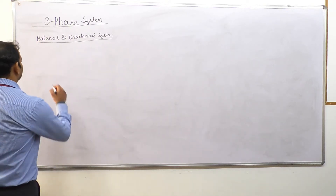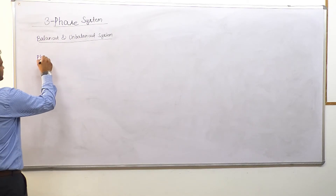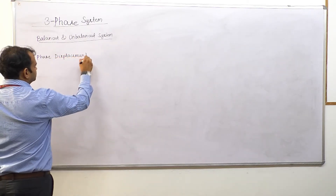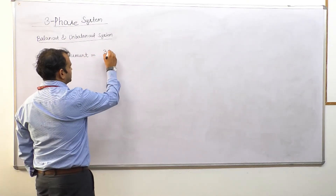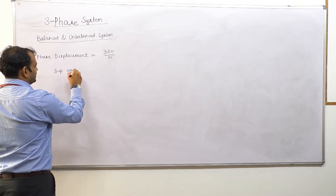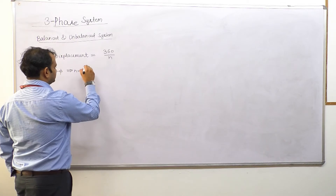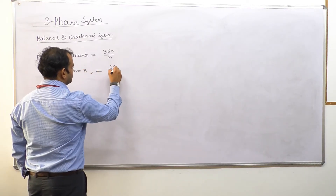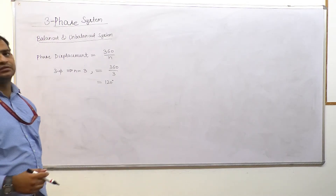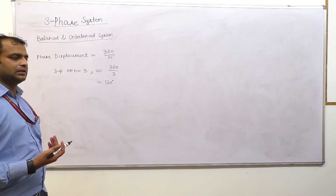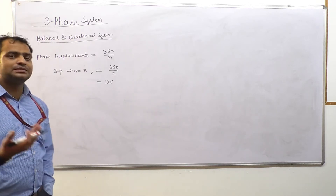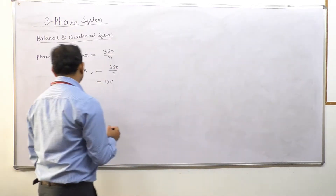Now we can discuss the balanced and unbalanced system for three-phase polyphase system. In the last lecture, we found the phase displacement, which is 360 divided by N. In case of three-phase, N is equal to 3, so we calculate 360 by 3, which is 120 degrees. The angle between the two phases is 120 degrees.